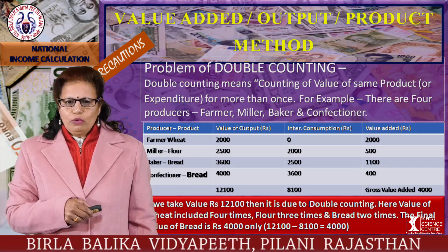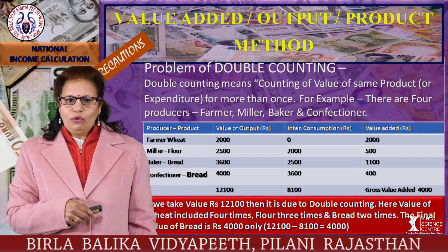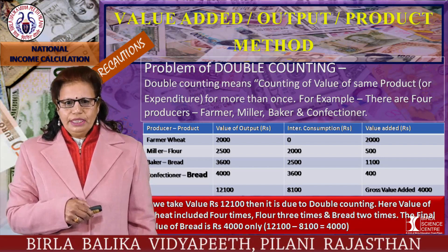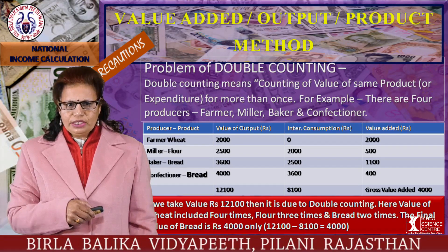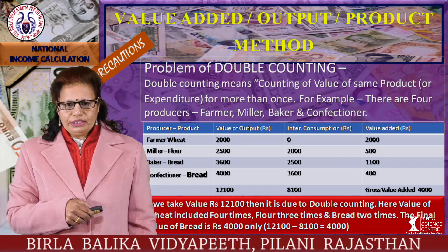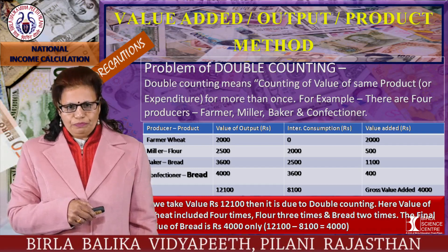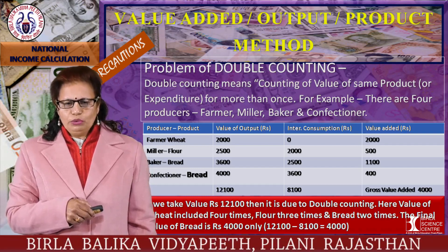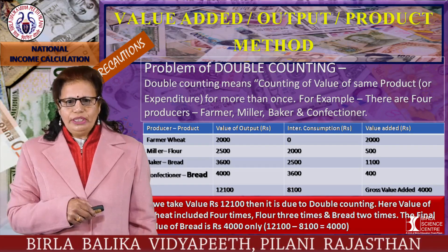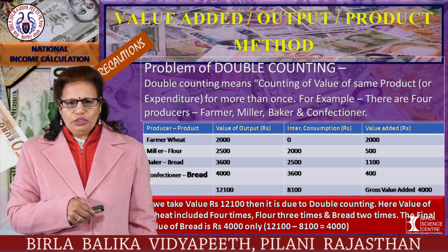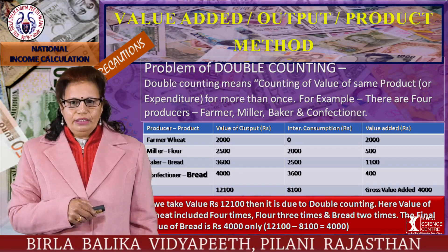This correct calculation is shown in the third column. From the first column (value of output), you deduct intermediate consumption: 2500 minus 2000 equals 500, and so on. For the farmer, since there is no intermediate consumption, the value added is 2000. The total gross value added in the third column is 4000. As an economics student, you should take only this 4000 value.